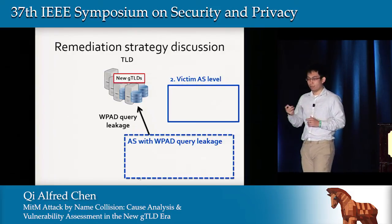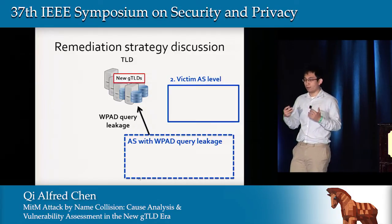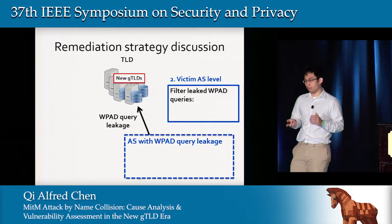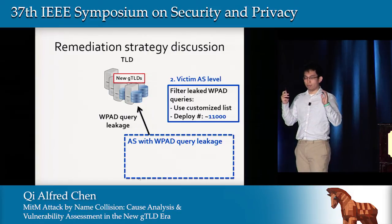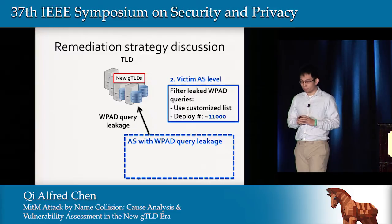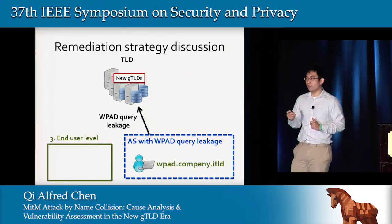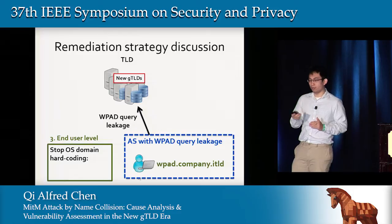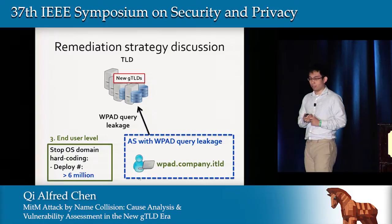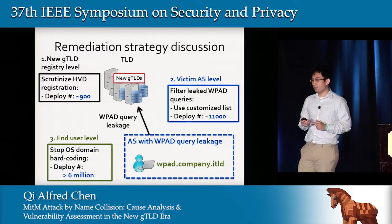I'll now discuss remediation strategies at different levels in the DNS ecosystem. For new GTLD registries, they should ensure that HVDs are not registered or apply more scrutinized registration processes — estimated to require around 900 different registries to participate. For victim ASes, they can filter those third-party WPAD query leakages; since HVDs are AS-specific, each AS needs its own customized filtering list, with an estimated 11,000 deployment points. At the end-device level, devices need to stop mistakenly issuing internal queries — for example, stopping the OS hard-coding behavior — but this involves over 6 million deployment points. Using these approaches jointly would maximize protection.